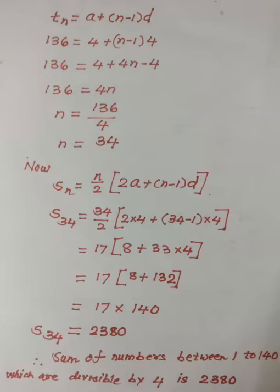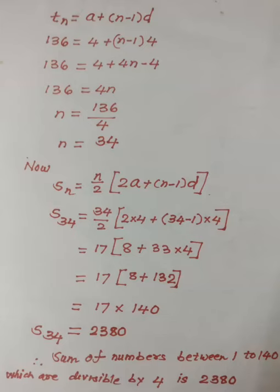Now we substitute the values: tn = 136, a = 4, and d = 4. Simplifying: 136 = 4 + (n - 1) × 4, which gives 136 = 4 + 4n - 4, so 136 = 4n. Therefore n = 136 ÷ 4, which gives n = 34.